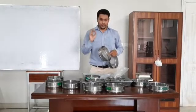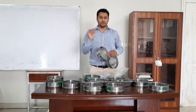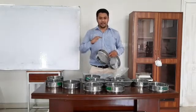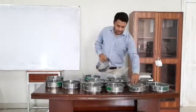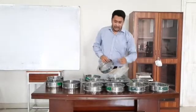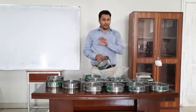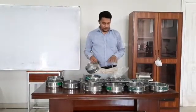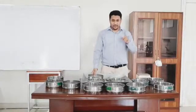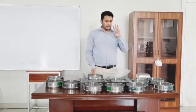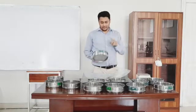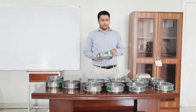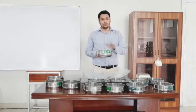Select sieve number 40, sieve number 10, and sieve number 200, and also select other sieves between these numbers. Now let's start the data recording. There are 3 main things to record: the empty weight of the sieve, the size of the sieve, and the weight of the sieve with soil.